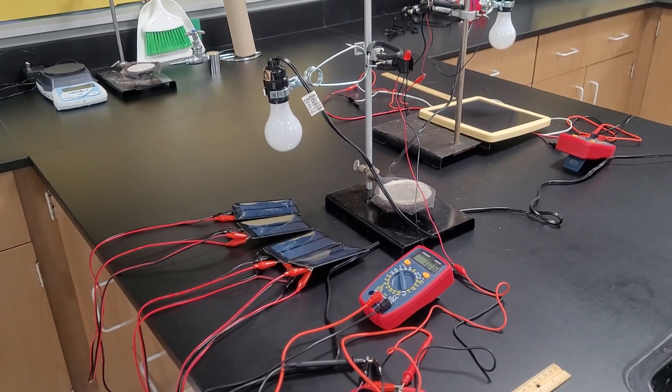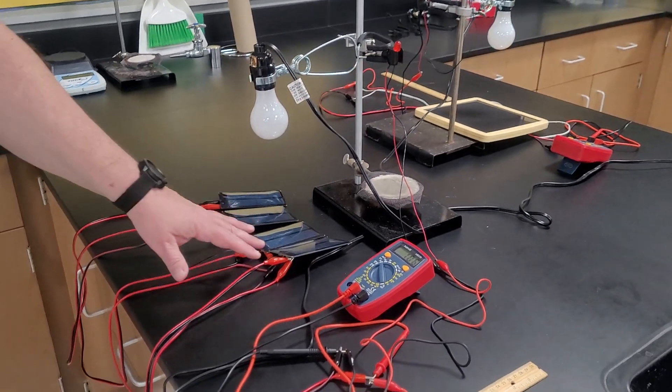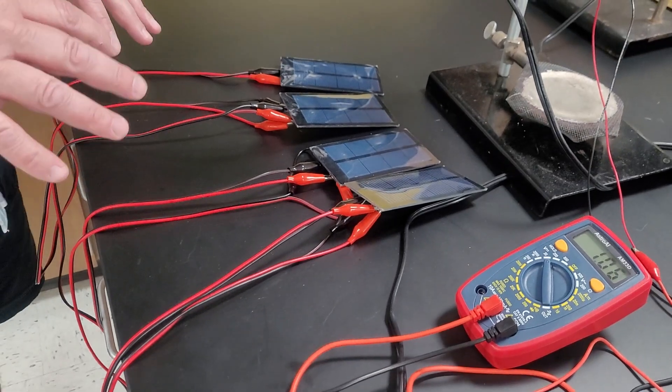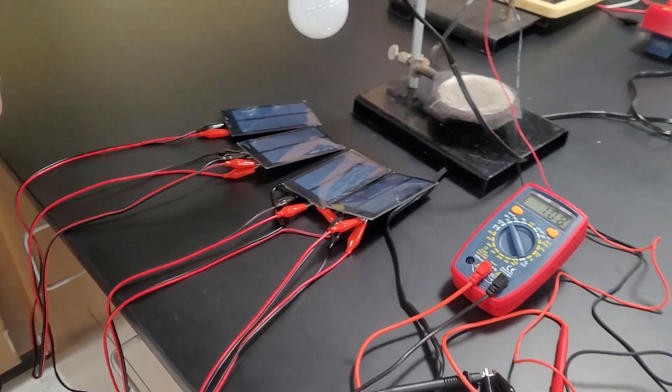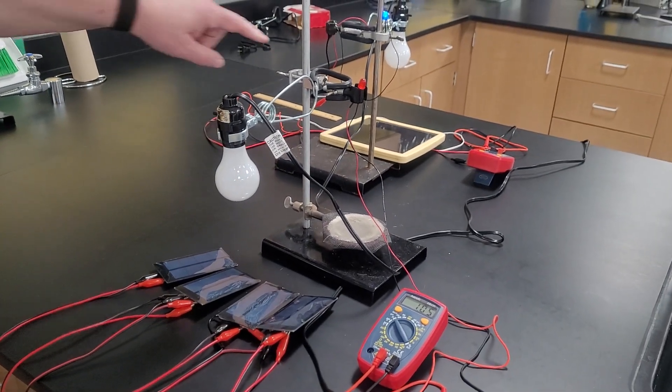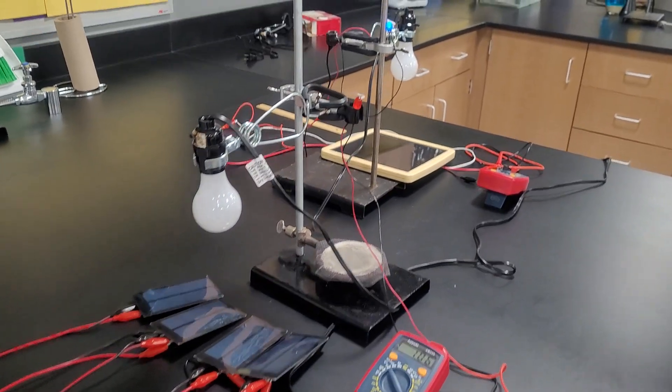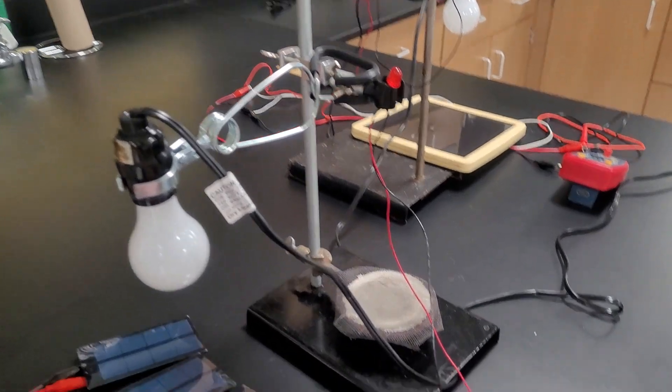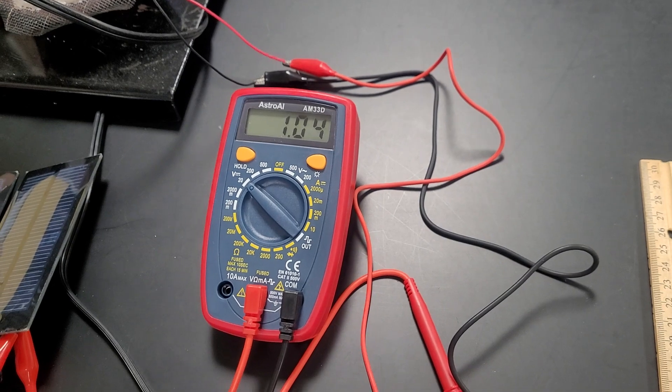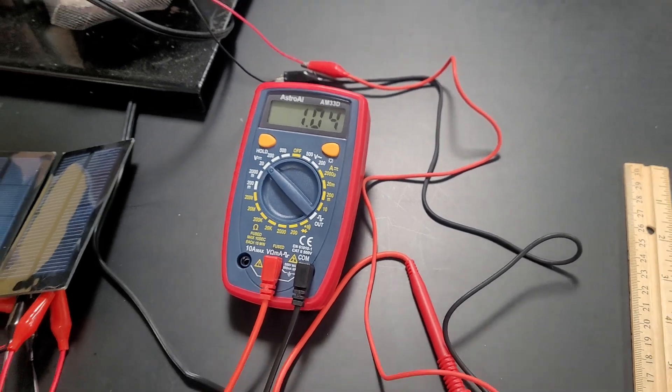Now our second solar array setup we have four smaller panels and we're trying to check to see if there's a difference in having four smaller panels or benefit of having one larger higher quality panel. If you notice with these four smaller panels our little LED light is not lit right now. We're only generating approximately 1.04 volts of electricity with our classroom lights. The same classroom light settings we had before for the large panel.